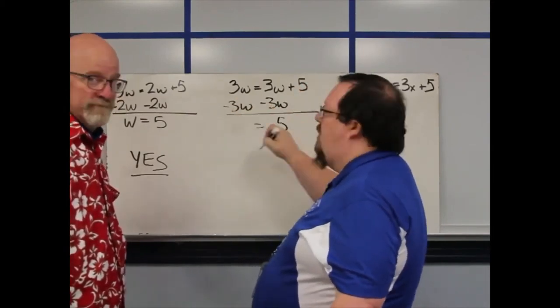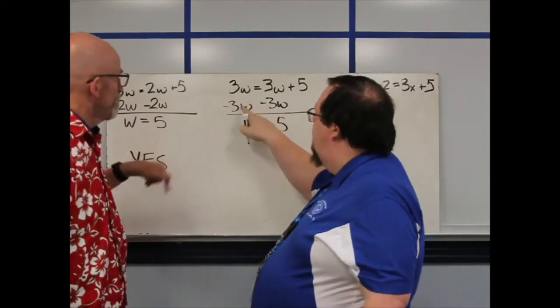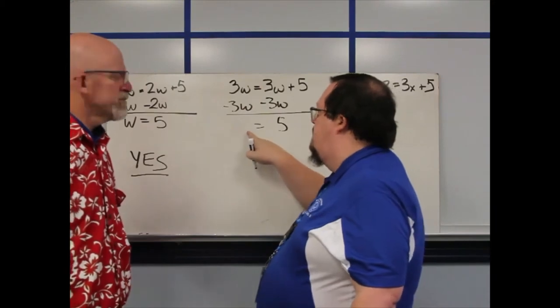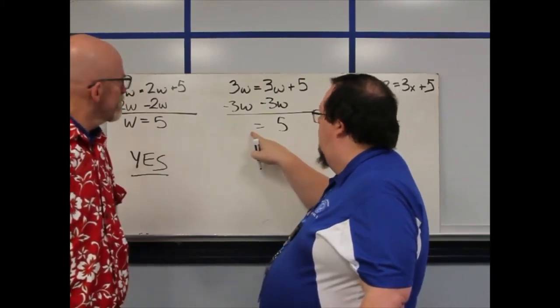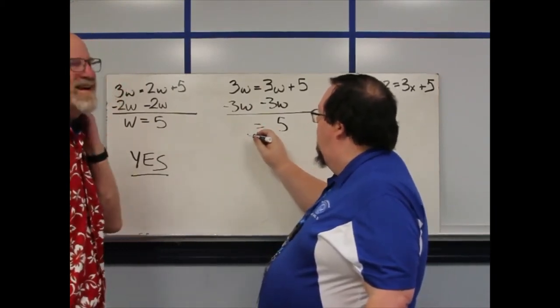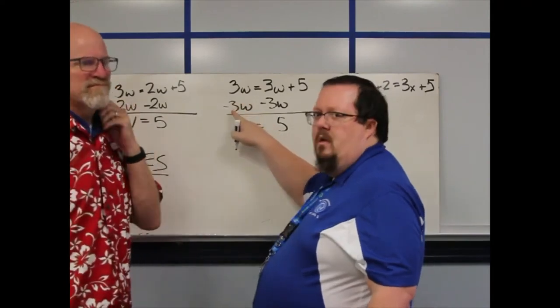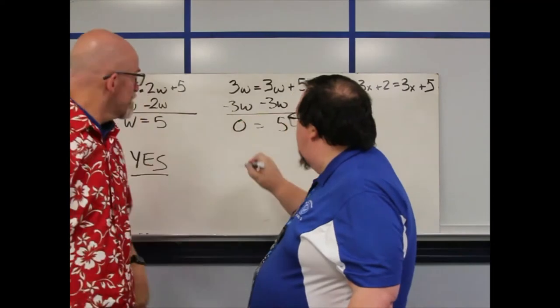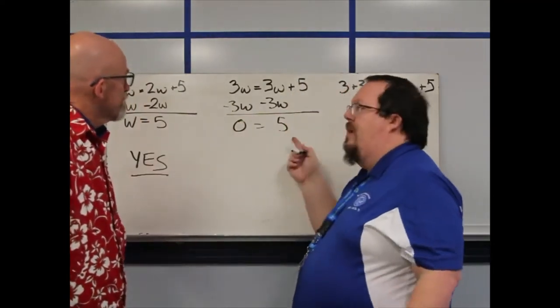That's five, just like you got before. And three Widgets minus three Widgets is... I can't leave a blank. It's not... Nothing. It's not one Widget. It's not one. Three minus three... Zero. It's zero Widgets, which is just zero. And zero equals five.